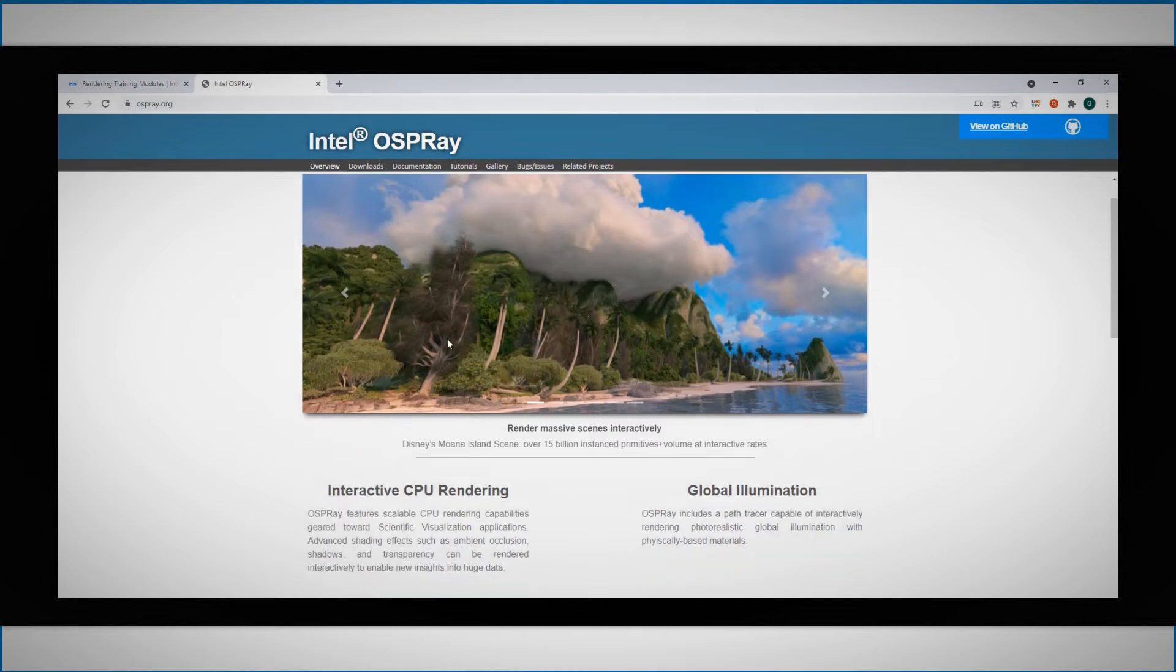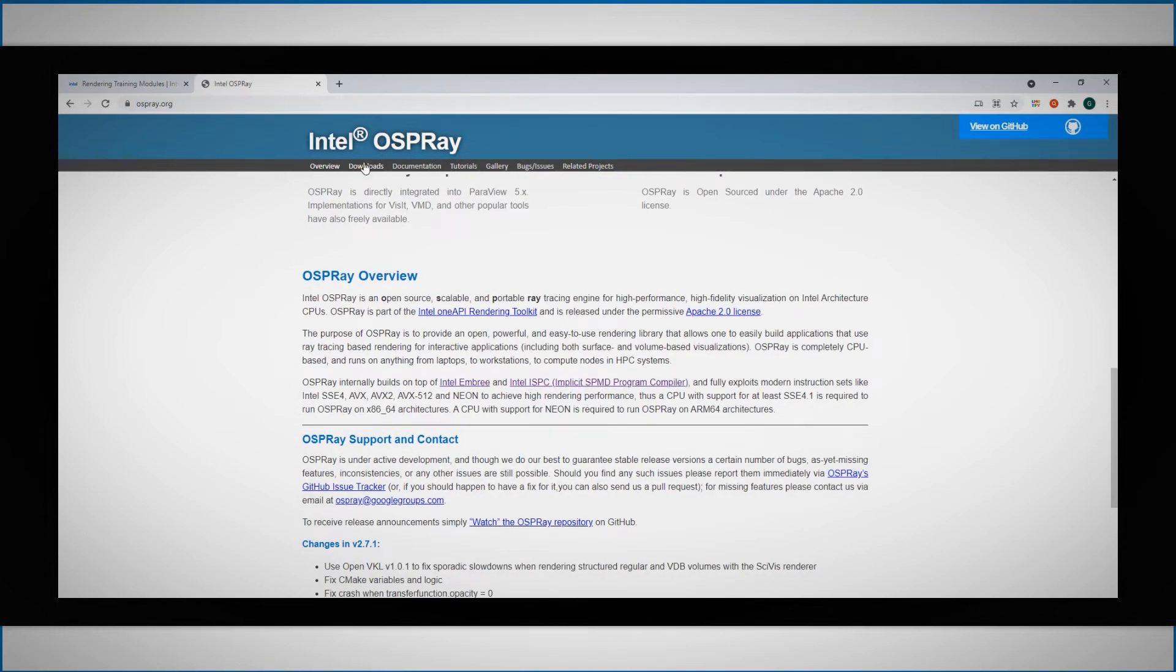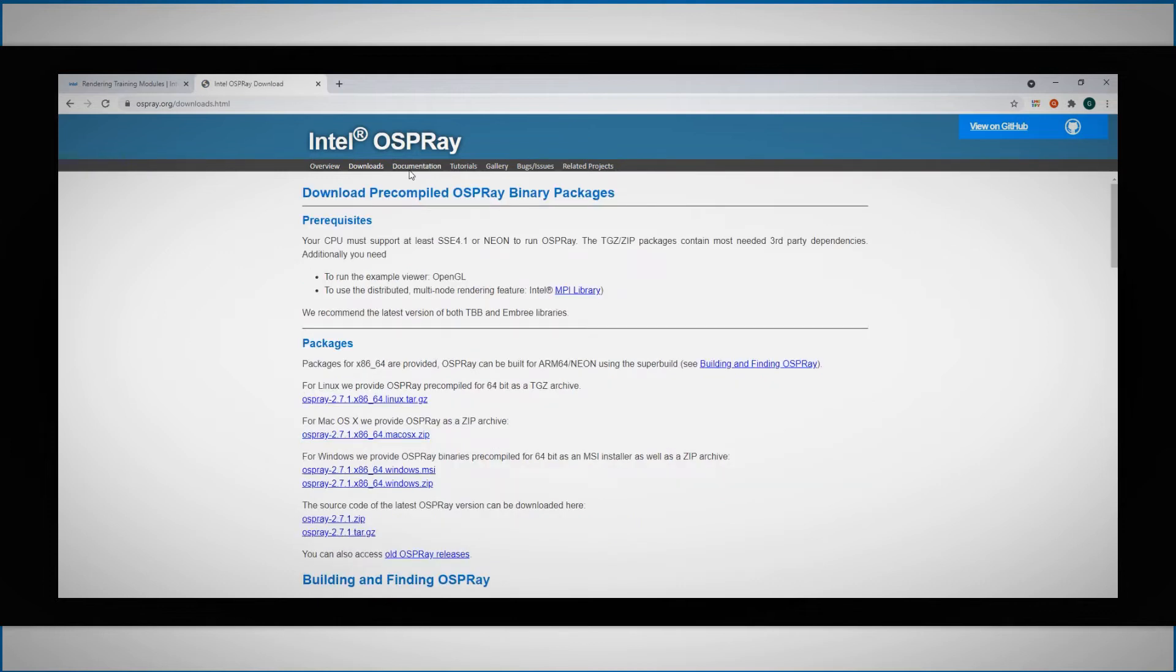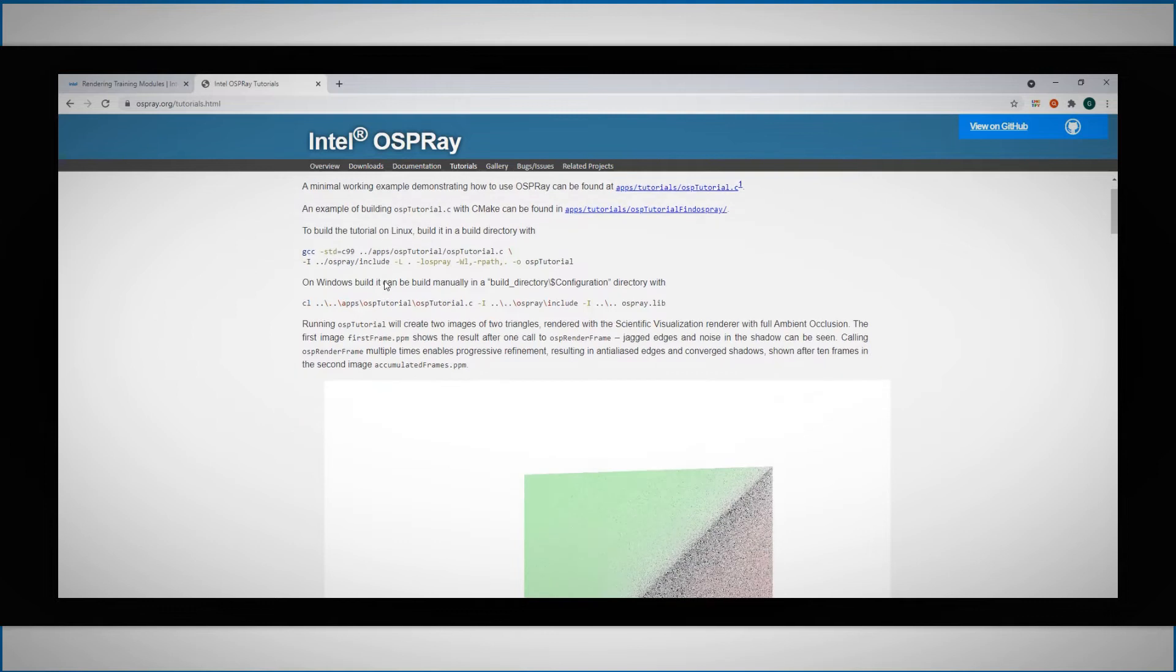Option 2 resource is ospray.org. You can find here an overview, you can download and install, access the API documentation, take a look at the tutorials and even jump directly to the code in GitHub.